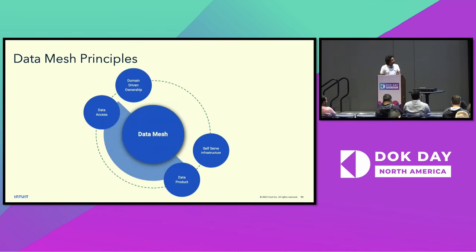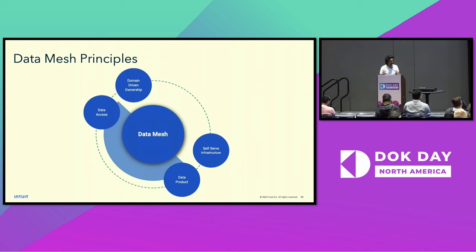The four core principles of data mesh are: domain-driven ownership — building your architecture where data is treated under a domain; building federated data governance and data access, meaning a principle of least-access policies where data access is governed across the organization; building self-serve infrastructure for promoting deployment of data infrastructure; and treating data as a product, which is the product thinking aspect.